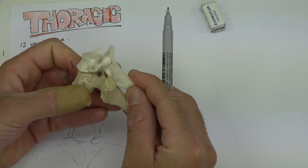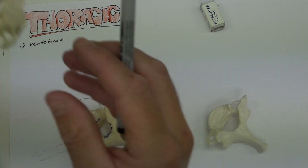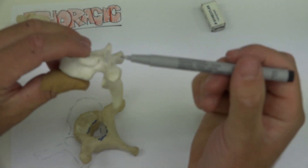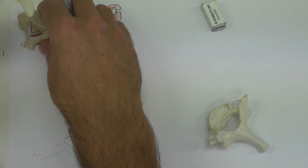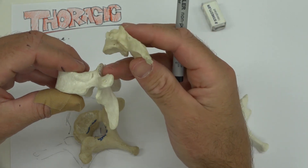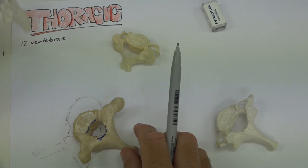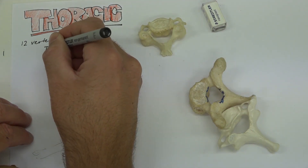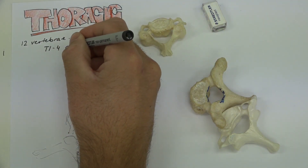In the cervical vertebrae, the articular facets are more oblique, running on an angle. Here in the thoracic, what's typical is that they are vertical in their orientation, in the coronal plane. To go from more horizontal and oblique to vertical, we need a transition. Anytime we transition from one segment to another, we're going to have atypical vertebrae — T1 is definitely atypical, generally described as T1 to T4.